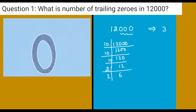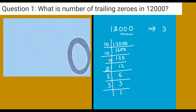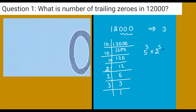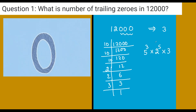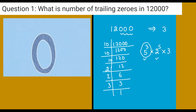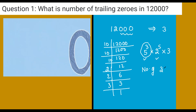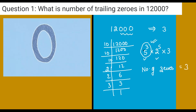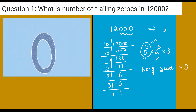Continuing the factorization: 2 × 6, then 2 × 3, and 3 × 1. So how many fives are there? 5 to the power 3. How many twos? We get 2 to the power 5. Zeros can always come when there is a 5 paired with a 2. If the number of fives is less, the trailing zeros will be less. So the number of zeros here is 3. In every question, we factorize and find how many pairs of 5 and 2 we have. Since 5 factors are generally fewer, we prefer finding the 5 factors.